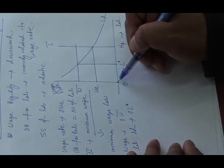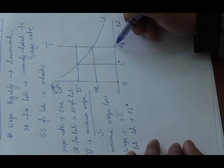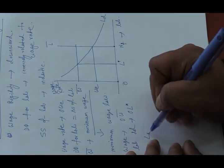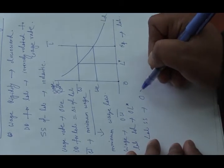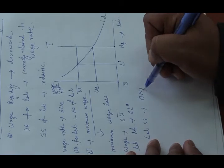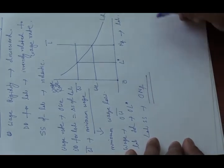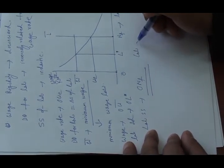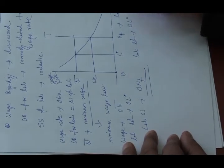In this case, total number of labour present in market is ONF. This is the total number of labour present in market. Labour demand will be OL star.